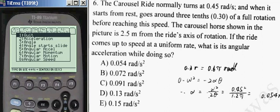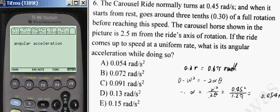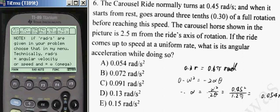I put the physics in the entry line of the calculator, and up comes a menu. And we're going to scroll to number 5, angular acceleration, I'm just going to press the number here. Press enter. I try to help you as much as possible. If rads per second are given in your problem, choose that in my menu. We're going to do that.